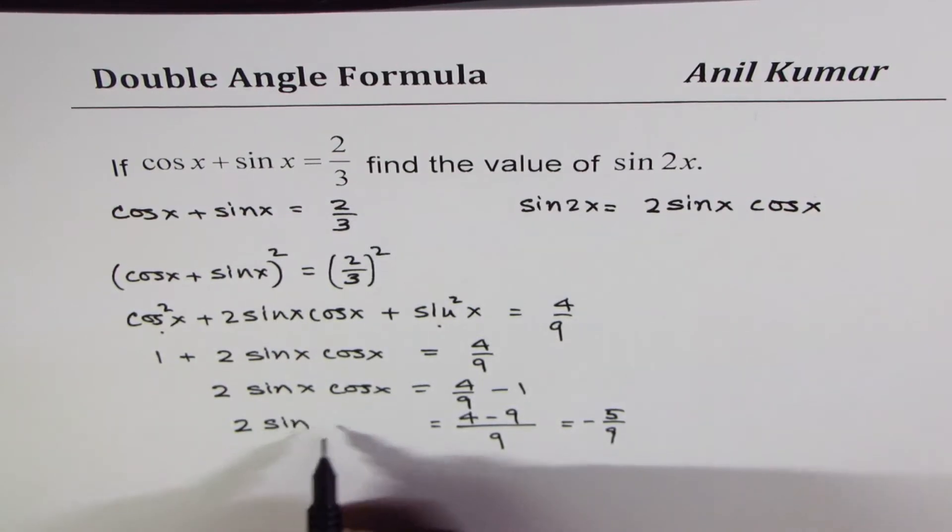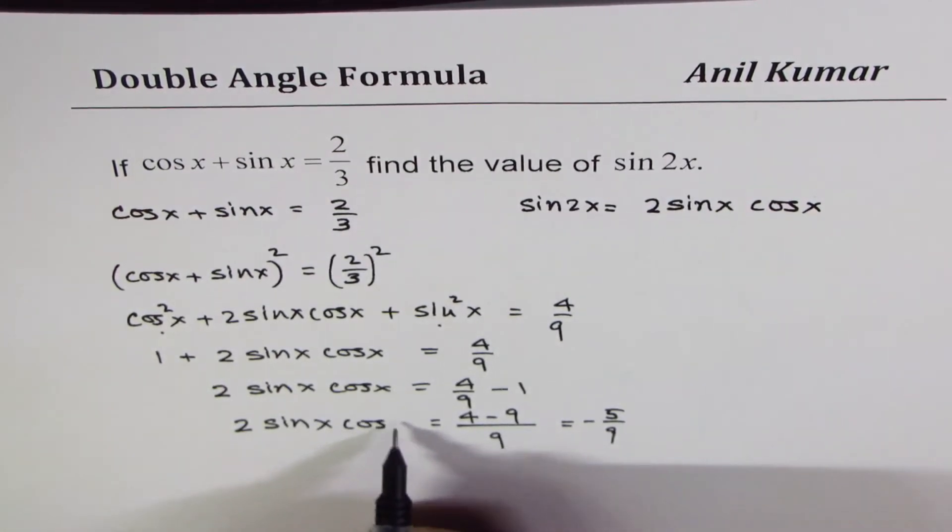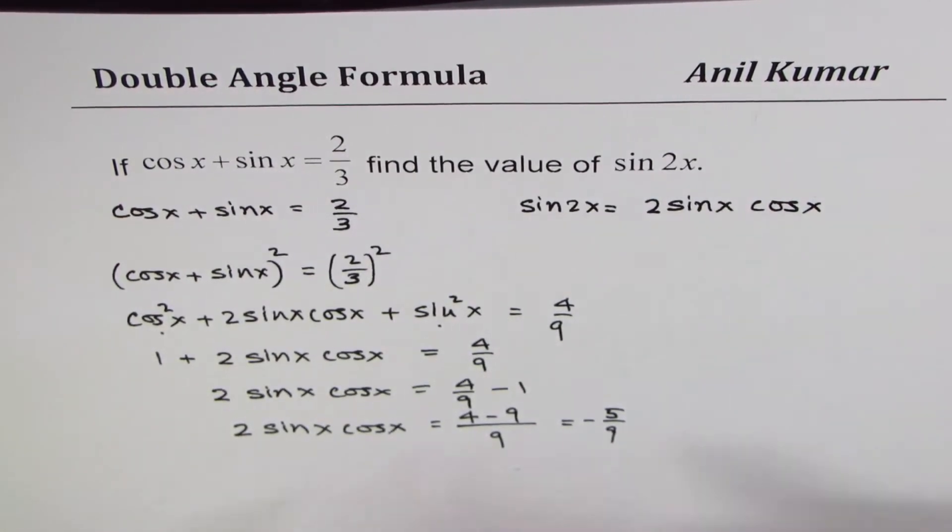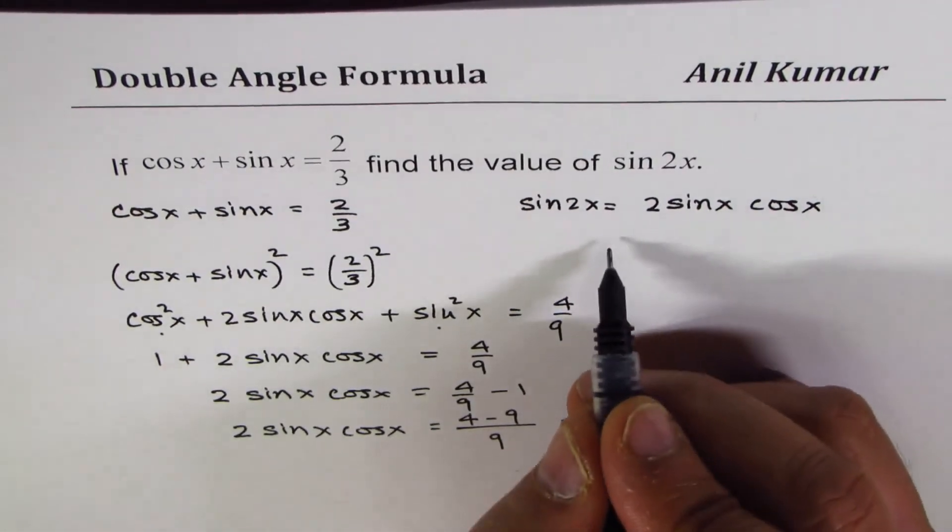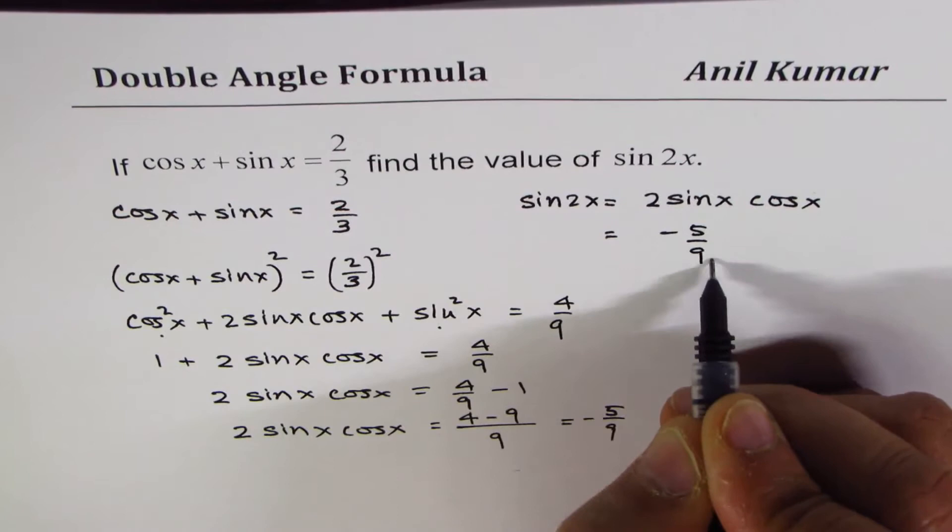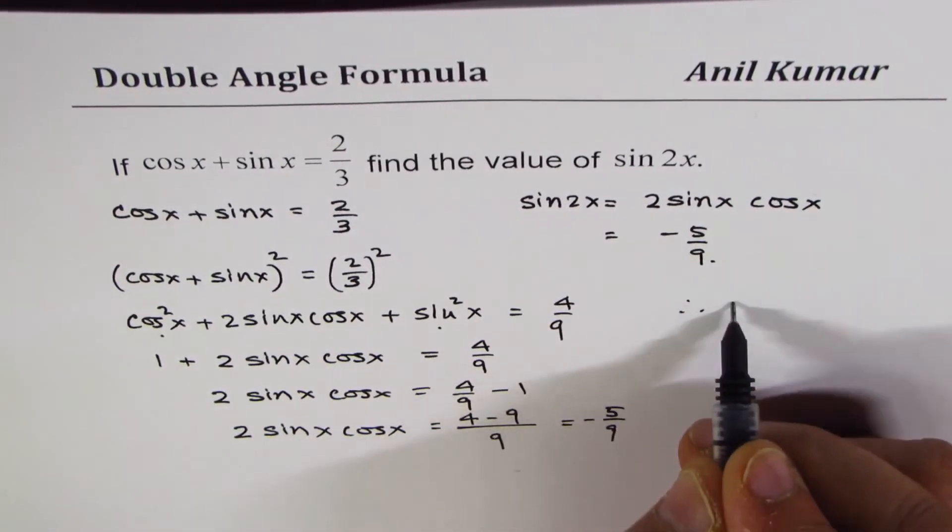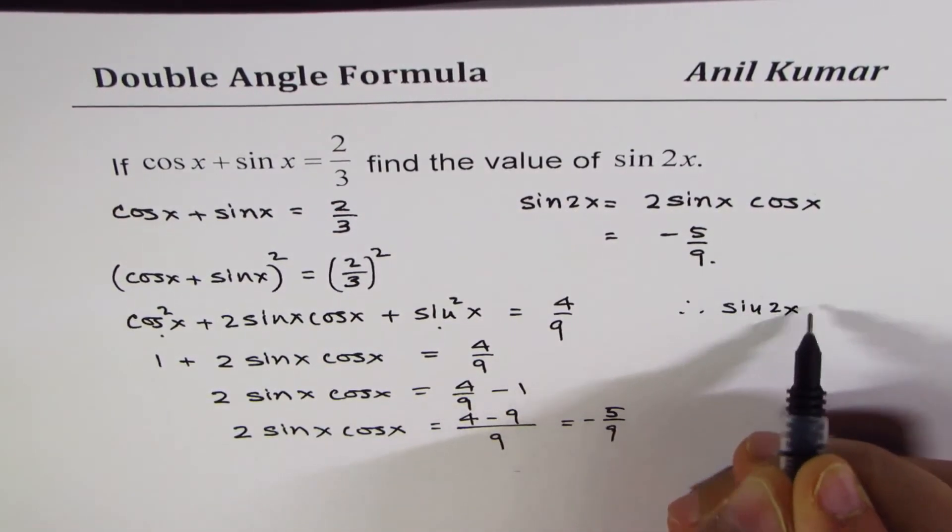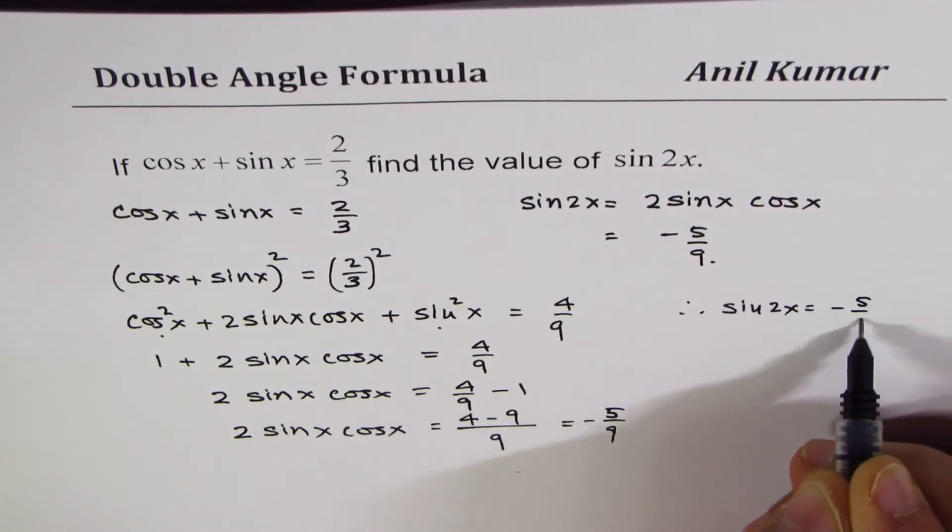So that is the value of 2 sin x cos x. That gives us the result. 2 sin x cos x equals minus 5 over 9, and therefore we get sin 2x equals minus 5 over 9.